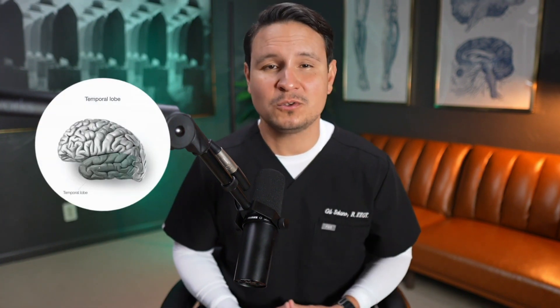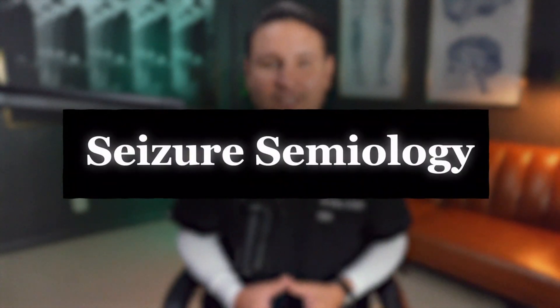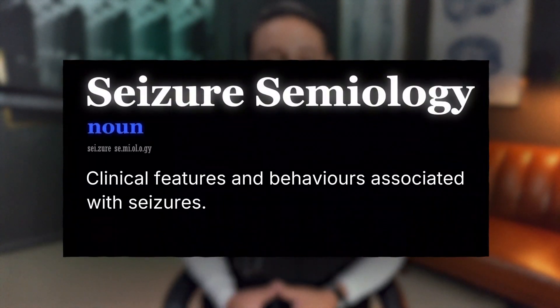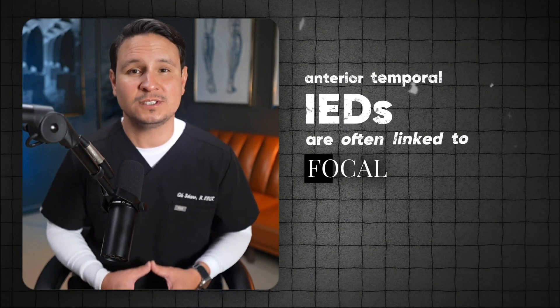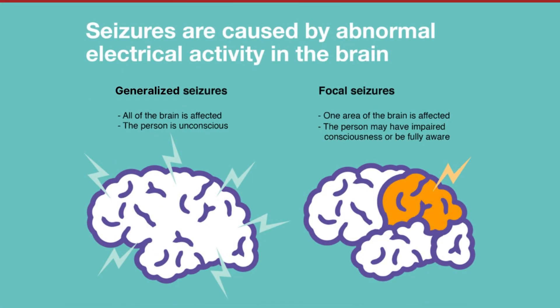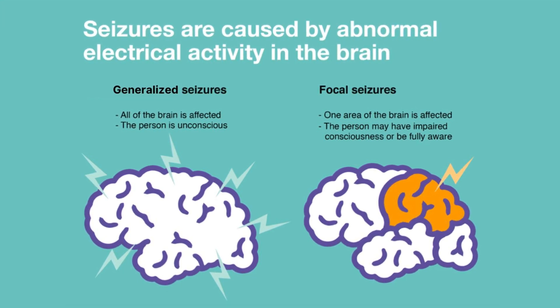IEDs originating from the temporal lobe are strongly associated with a higher risk of clinical seizure expression. This is particularly important when we consider seizure semiology — the clinical features and behaviors associated with seizures. Anterior temporal IEDs are often linked to focal seizures of temporal lobe origin, which can manifest in various ways depending on the precise location and extent of the epileptiform activity within the temporal lobe.